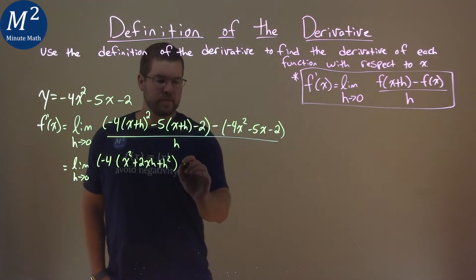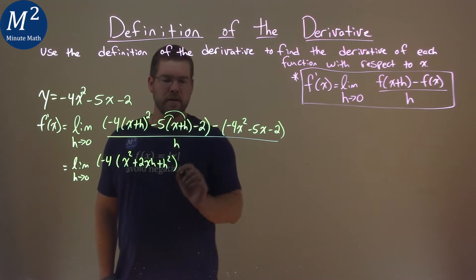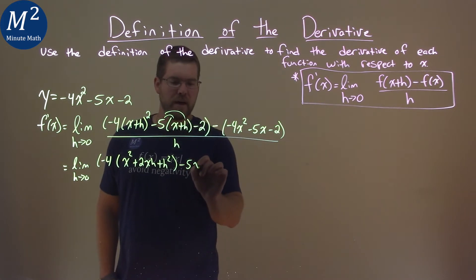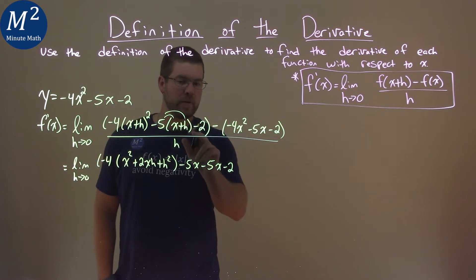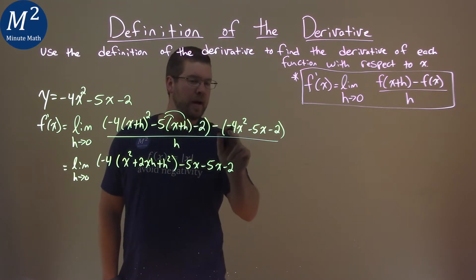And then that's a minus. Well, let's distribute the minus 5 out here. Minus 5x minus 5h minus 2, right? Now we have a minus, a minus.